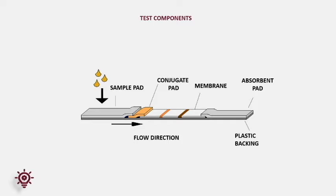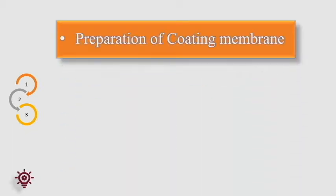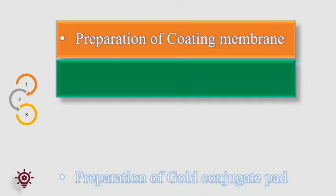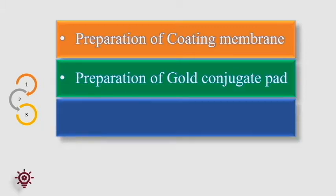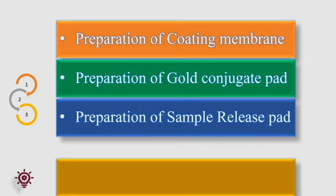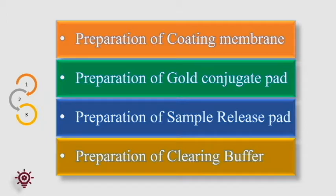We will discuss in detail, step by step, about the process involved in manufacturing these components. Here I am going to provide the recipe for the preparation of malaria antigen test. This formulation is specific for the raw materials and conditions, and may vary with other active ingredients and geography. The steps consist of: preparation of the coating membrane, preparation of gold conjugate pad, preparation of sample release pad, and preparation of clearing buffer.